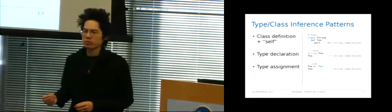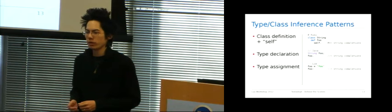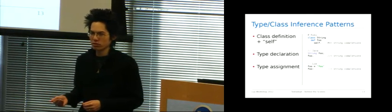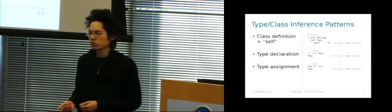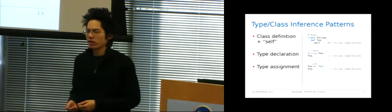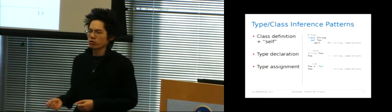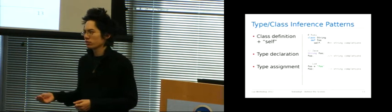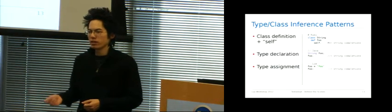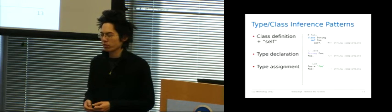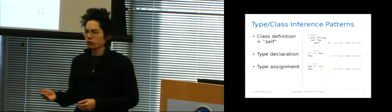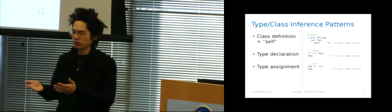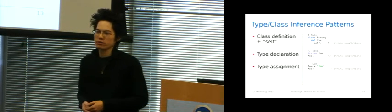So AdeptSense can infer the type or class of an object using pattern matching. For example, it can recognize when it's inside a class declaration and it's completing a self type of keyword for the languages that support such things. It can also infer the type of an object through its type declaration in a statically typed language, such as Java or C. And then it can infer its type from a type assignment in a dynamically typed language, such as Lua. So in this last example here, the foo variable would be recognized as a string, and then when you do foo colon, it will give you the list of string completions that you expect, including the len function.